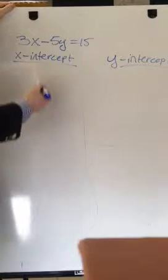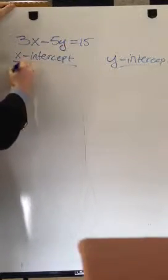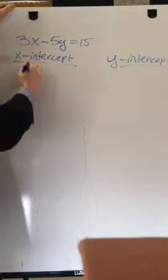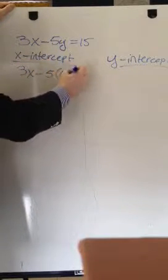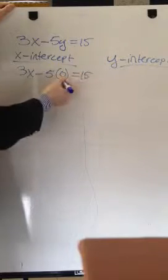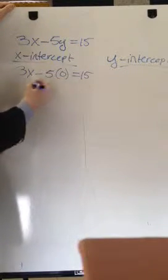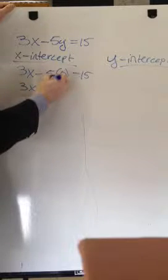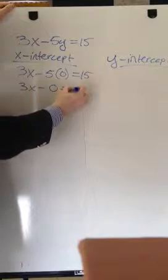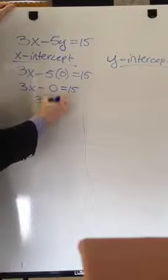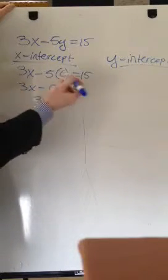The first thing I want to do is find the x-intercept. To find the x-intercept, set y to 0 and solve for x. So I rewrite the equation — instead of y, I'm setting y to 0, so the y turns into a 0. So now instead of 5 times y, it's 5 times 0. I have 3x minus 5 times 0 equals 15. 3x minus 0 is 15. Minus 0 is nothing — it disappears.